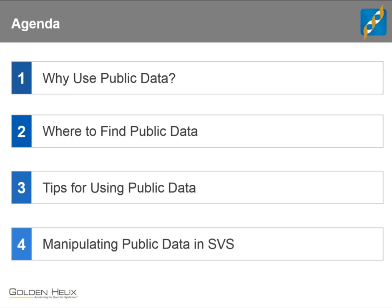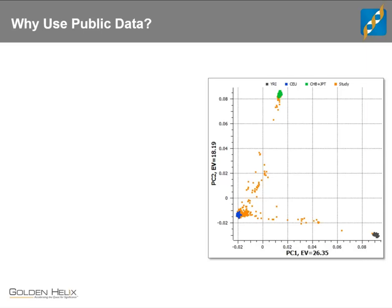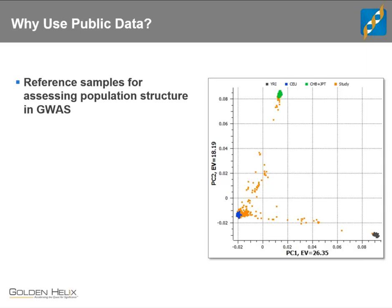Let's dive right in and talk about some of the reasons why you might use public data as part of your analysis. The first one, illustrated on screen, is using public data as reference samples for assessing population structure in GWAS. You can see a principal components plot where I've used HapMap data to anchor the PCA and give an idea about the ethnic structure of my study samples shown in orange. The majority correspond with European ancestry, but there is also some Asian and African admixture.